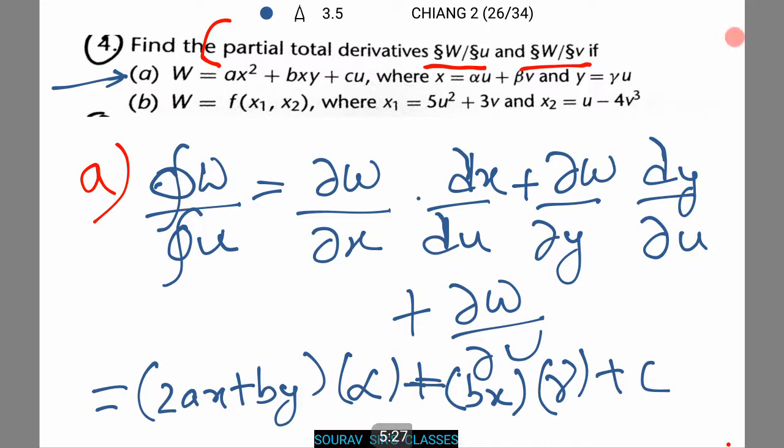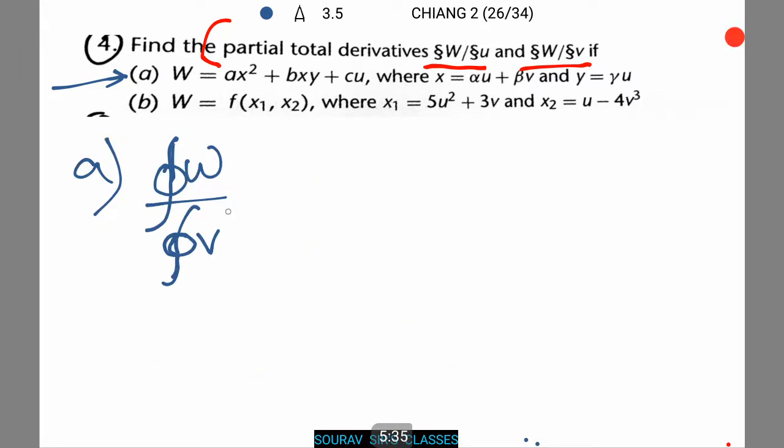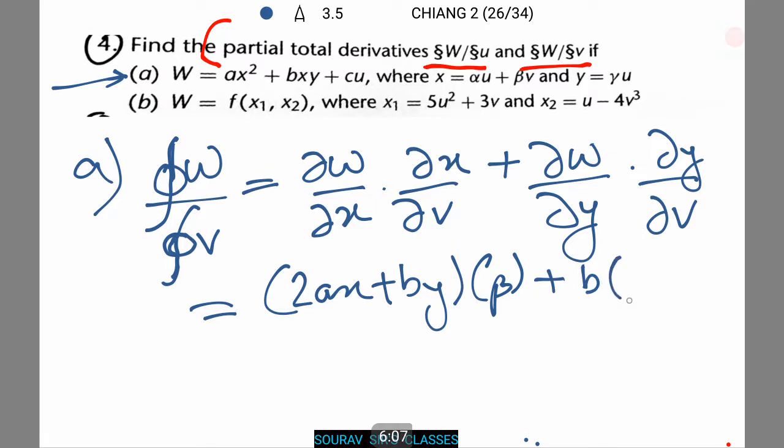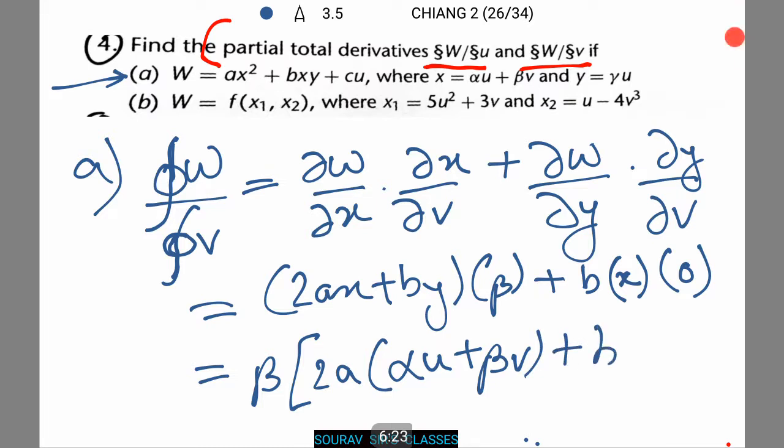Now we are going to be solving for dW by dV. Phi W by phi V equals to dW by dX into dX by dV plus partial derivative of W by partial derivative of Y into partial derivative of Y by partial derivative of V. And this comes to 2aX plus bY into beta plus bX into 0. That is if we take it common beta into 2a into alpha U plus beta V plus b gamma U.